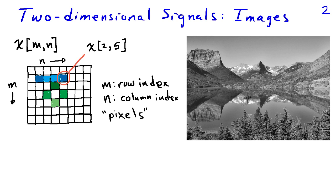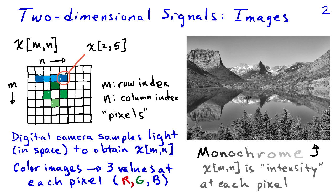Two-dimensional signals can be thought of as images. We define a two-dimensional signal x as a collection of values at different indices m and n, where m describes the position with respect to the rows and n describes the position with respect to the columns. The value circled in red is at x of m comma n because it's the second row and fifth column. We obtain this discrete signal with a digital camera, for example, which samples light in space.